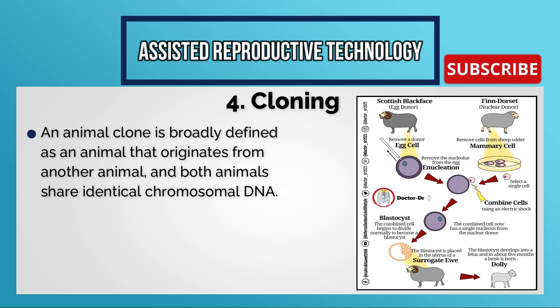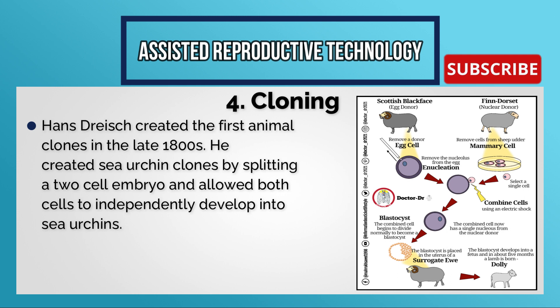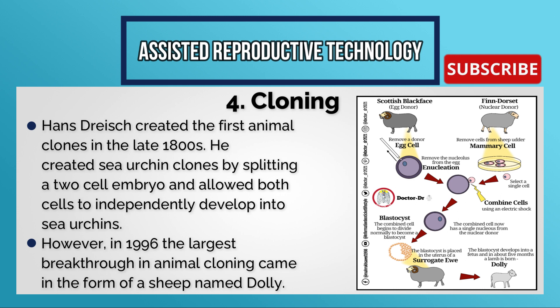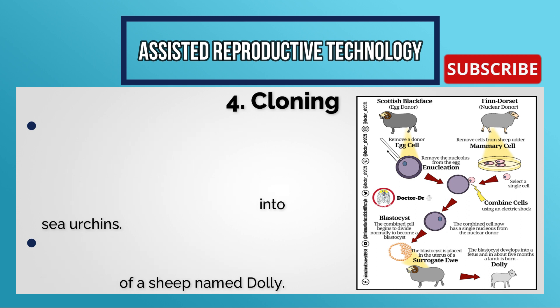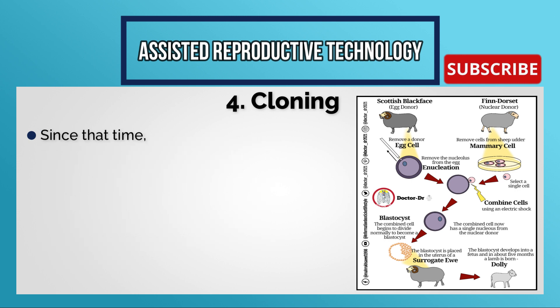Cloning: an animal clone is broadly defined as an animal that originates from another animal and both animals share identical chromosomal DNA. Hans Driesch created the first animal clones in the late 1800s by splitting a two-cell embryo and allowing both cells to independently develop into sea urchins. However, in 1996, the largest breakthrough in animal cloning came in the form of a sheep named Dolly — the first animal to be cloned using the nucleus of a differentiated adult cell as a donor. Cloning is also known as somatic cell nuclear transfer.